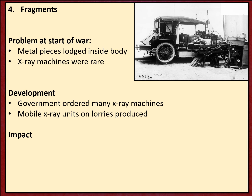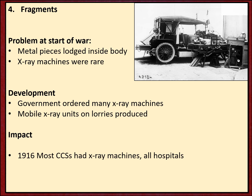Portable and transportable X-ray machines were crucial. The government quickly ordered many X-ray machines to be built, and mobile X-ray units on lorries and vans were produced in large quantities. By 1916, most casualty clearing stations had X-ray machines and all base hospitals did. However, some of these machines were unreliable - they would often overheat - and there was still a problem of getting soldiers X-rayed quickly enough to prevent infection from fragments inside them.